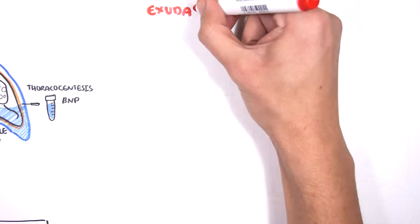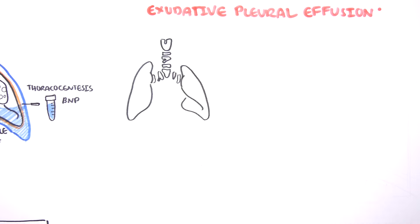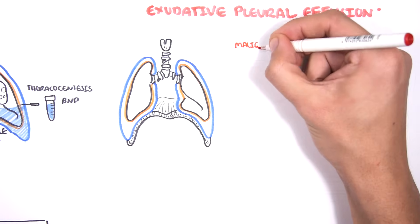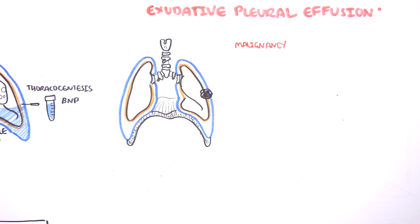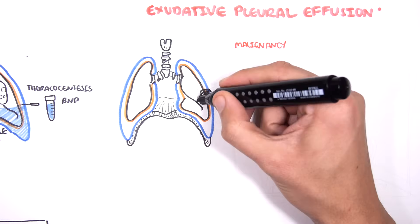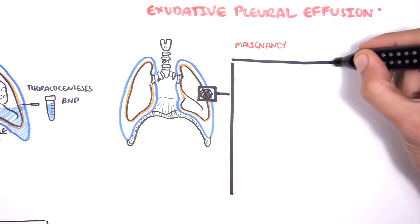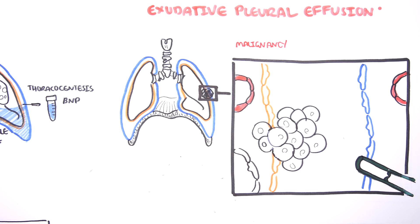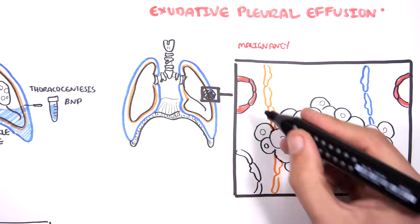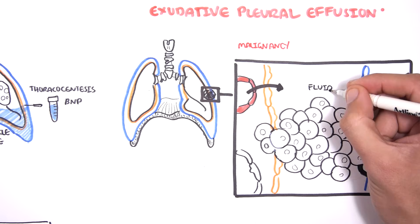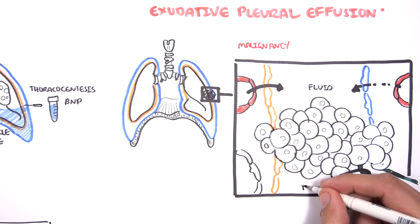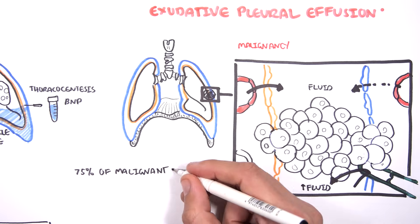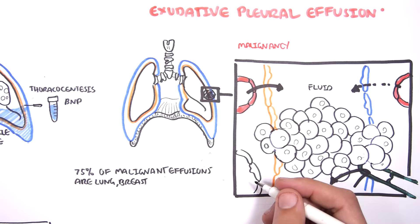Exudative pleural effusions are the pleural effusions with high LDH and/or high protein levels in the pleural fluid compared to serum. Examples include malignancy. Malignancy can cause effusions in many ways: it can obstruct the stoma of the lymph vessels, it can compress the lymph vessels itself. 75% of malignant effusions are from lung, breast, and ovarian cancer.